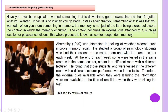Context dependent forgetting involves external cues. Have you ever been upstairs, wanted something downstairs, gone downstairs and then forgotten what you wanted? It is only when you go back upstairs that you remember what it was. When you store something in memory, the memory is not just of the item being stored but also of the context in which the memory occurred. The context becomes an external cue attached to it, such as location or physical condition. This whole process is known as context dependent memory.